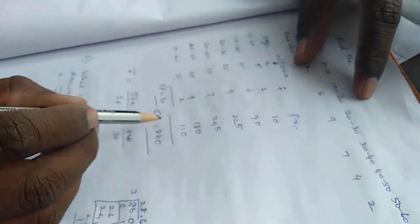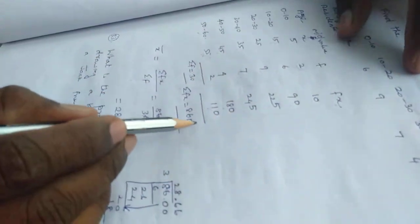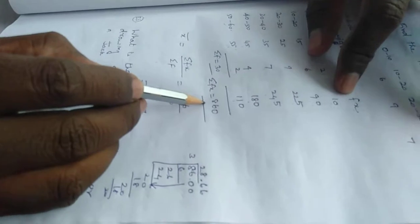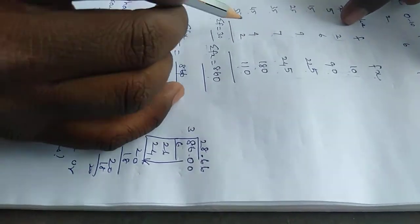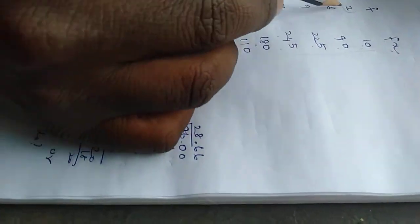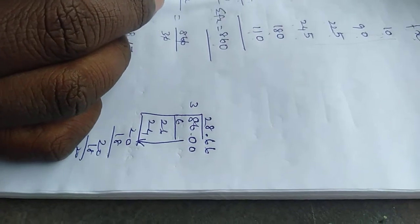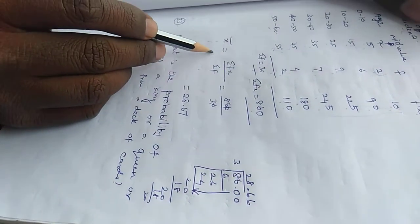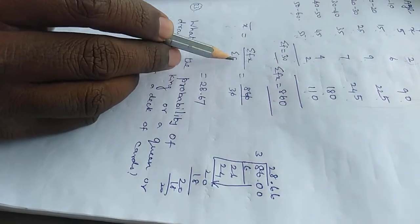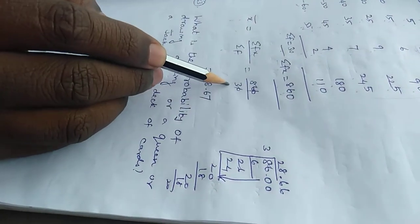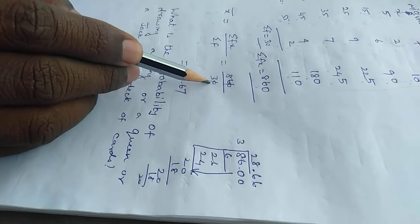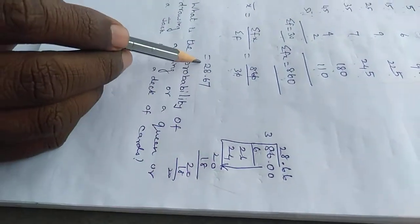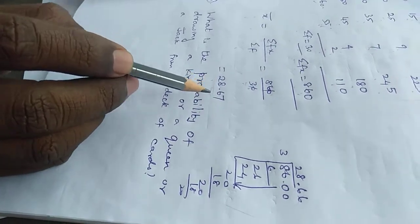Sum of f is 10. Add all the fx values. Mean equals sum of fx divided by sum of f, which gives approximately 38.67.